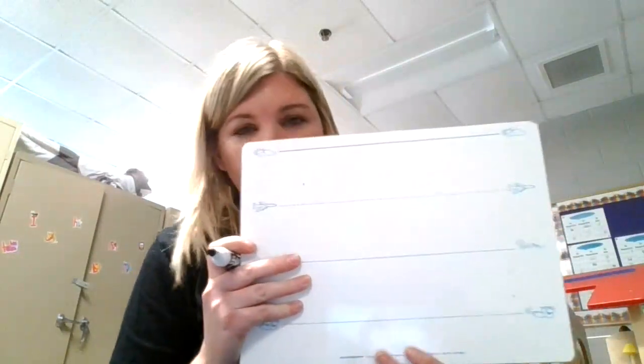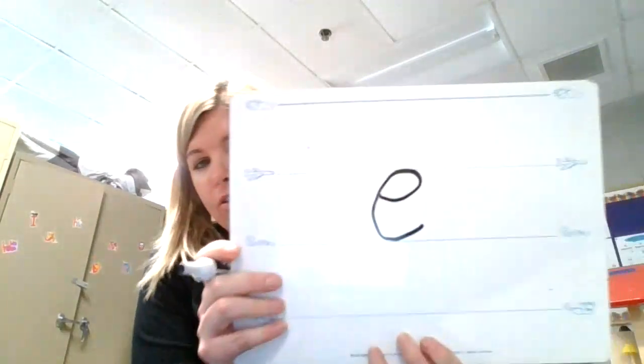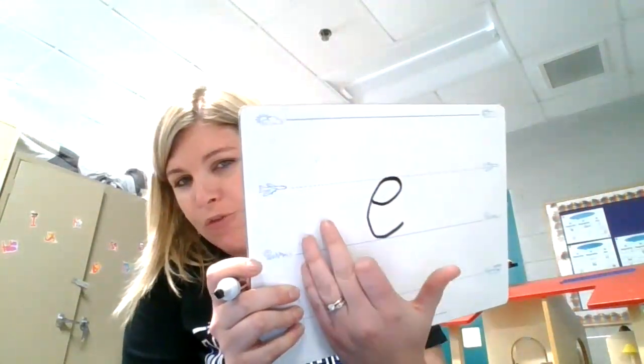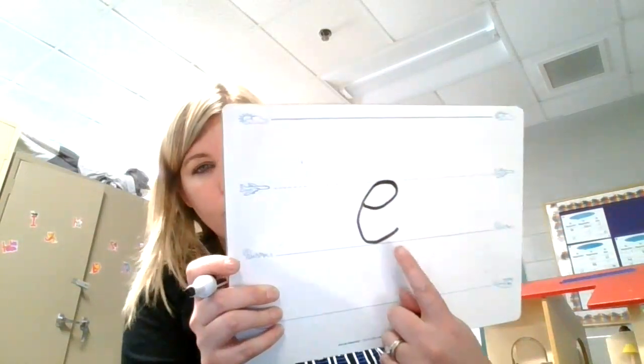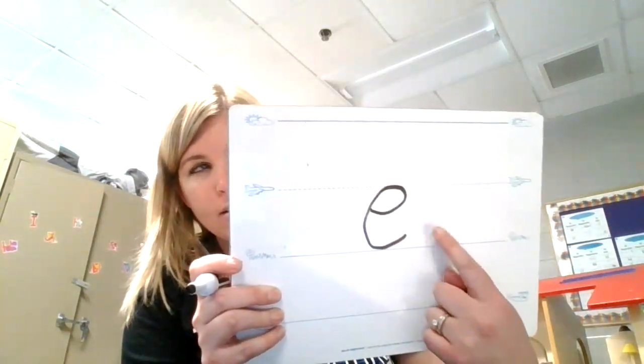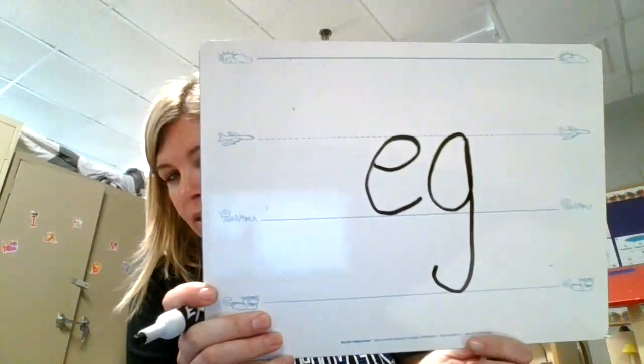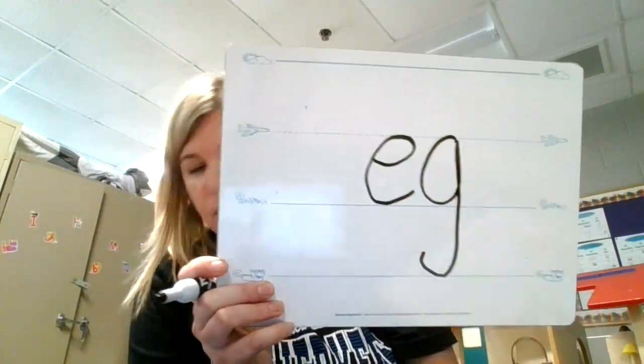Let's see if we can figure out what letters we need to be a part of our egg word family. What letter says E? Very good. E. Make sure your E is lowercase. We want to leave some room in the front so we can put a beginning sound in to make different words. So we have E, G, G. Make sure your G touches the worm line — that's a tricky one. So we have that egg word family.